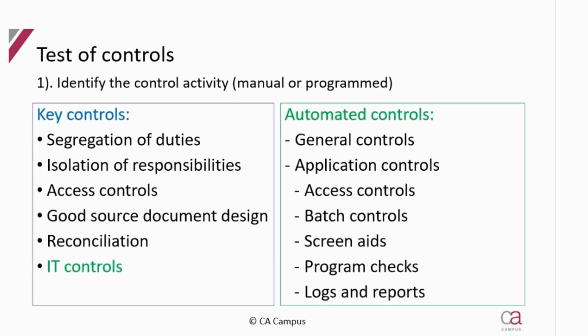A quick recap on manual controls: segregation of duties — more than one person performing a function; isolation of responsibilities — authorization signatures; access controls; physical security such as locking up goods, security guards, and gate control; good source document design with pre-numbered documents; and reconciliation — matching documents to each other.